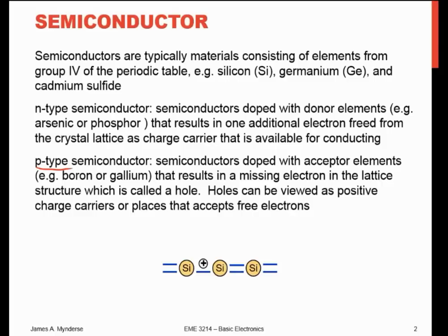We can make P-type semiconductors by doping with other elements. Those give us elements that have a hole, or missing electron, in their outer electron shell. We refer to that as a hole, and you can look at a hole as a positive charge carrier. As electrons move one way through this material, the place where that electron is missing is moving the other way.